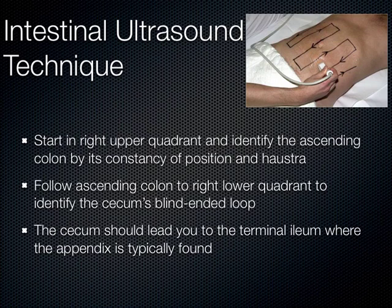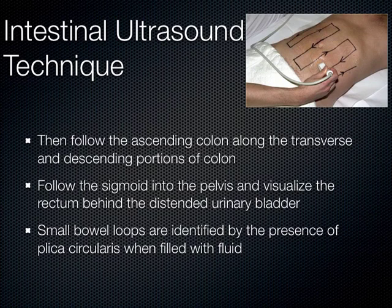You follow the ascending colon down to the right lower quadrant, where you expect to see the cecum with its blind-ended loop, which brings you to the terminal ileum where the appendix juts off. Then you go back up the ascending colon, across the transverse, and down the descending portion. You'll see the sigmoid down in the pelvis and the rectum — very easy to see almost always, right behind a nice fluid-filled bladder.